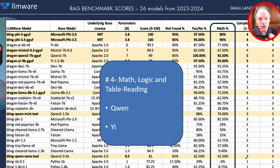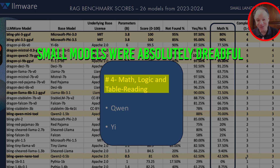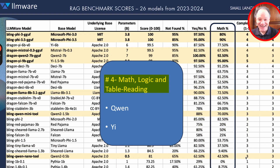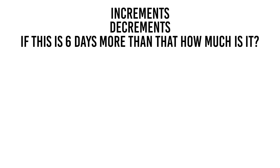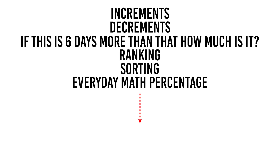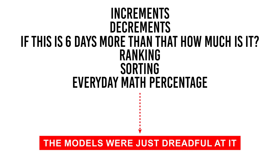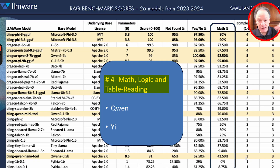Another notable takeaway is math, logic, and table reading. If you look at this column and see where we were even a little over a year ago, small models were absolutely dreadful at anything resembling math or common sense logic — basic things like increments, decrements, ranking, sorting, basic everyday math percentages. The models were just dreadful at it. That has changed a lot.